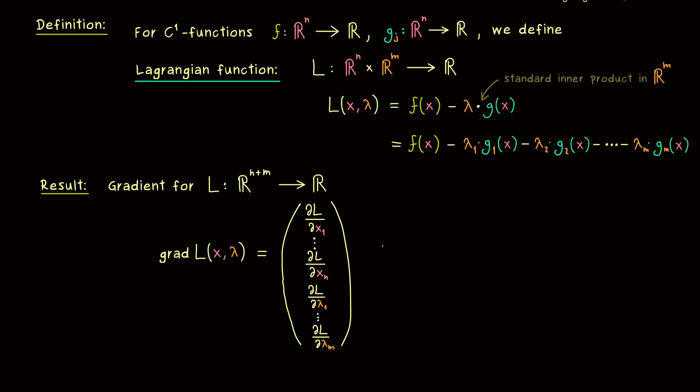By using our definition of L, we can calculate all these components. With respect to the components of x, we have the partial derivatives of f and the partial derivatives of the g functions. For the first n entries, we just have gradients. Namely, we have the gradient of f minus the gradient of the g functions: λ₁ times the gradient of g₁, then minus λ₂ times the gradient of g₂, and so on. In the end, we get the sum of the gradients of the g functions with coefficients λⱼ involved. This is something we should recognize from before.